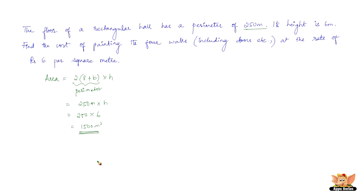We need to paint 1500 square meters at Rs. 6 per square meter. So the total cost is 1500 × 6 = Rs. 9000. Therefore, the cost of painting the four walls of the rectangular hall is Rs. 9000.